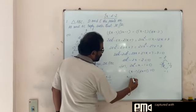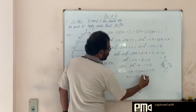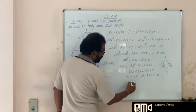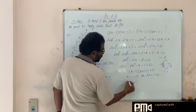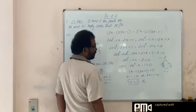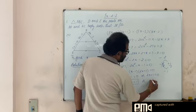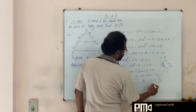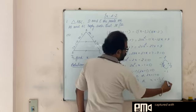x minus 1 into 2x plus 1 is equal to 0. So either x minus 1 is 0 or 2x plus 1 is equal to 0. Either x is equal to 1 or x is equal to minus 1 by 2.